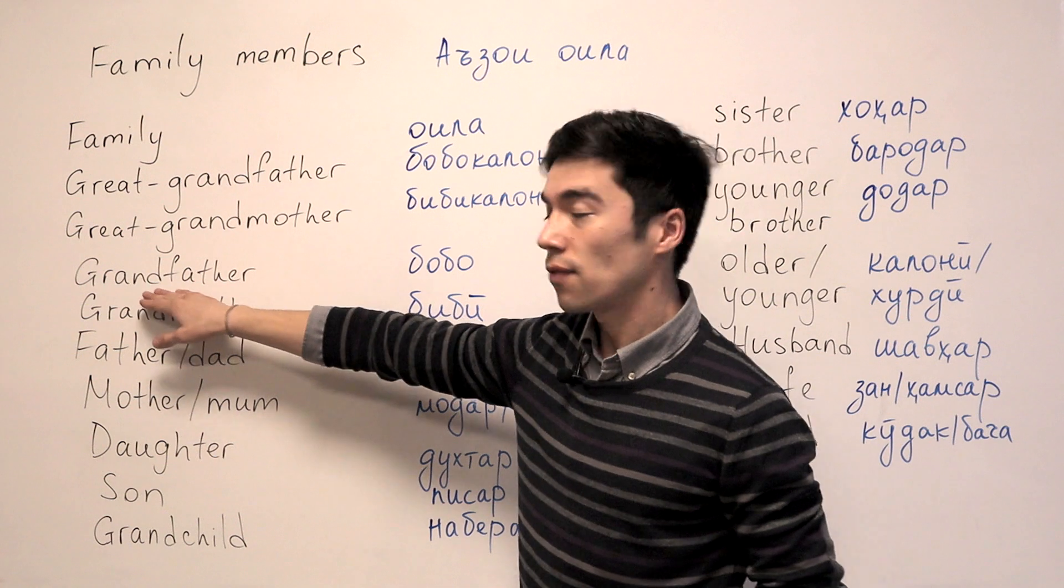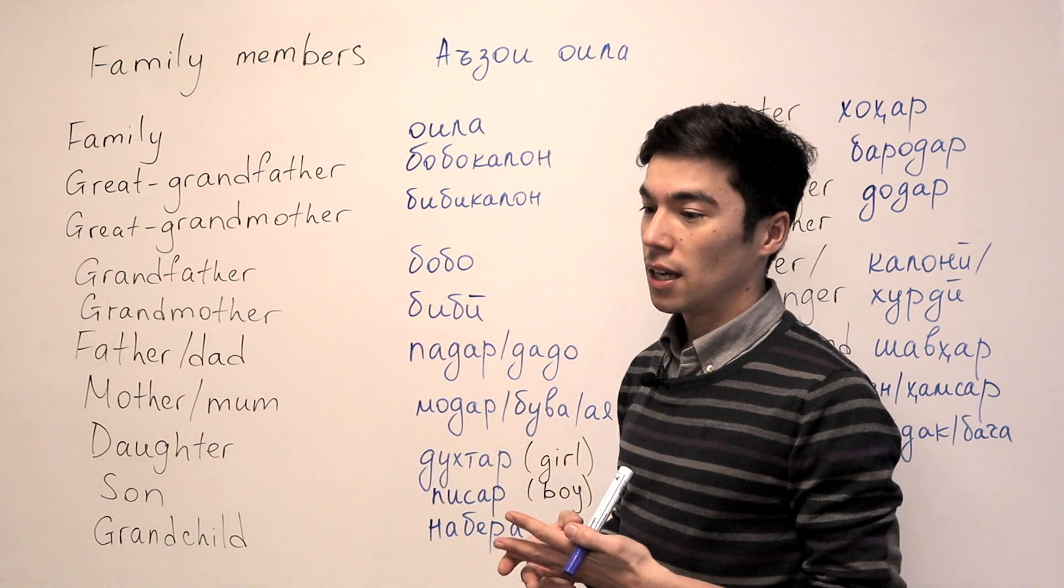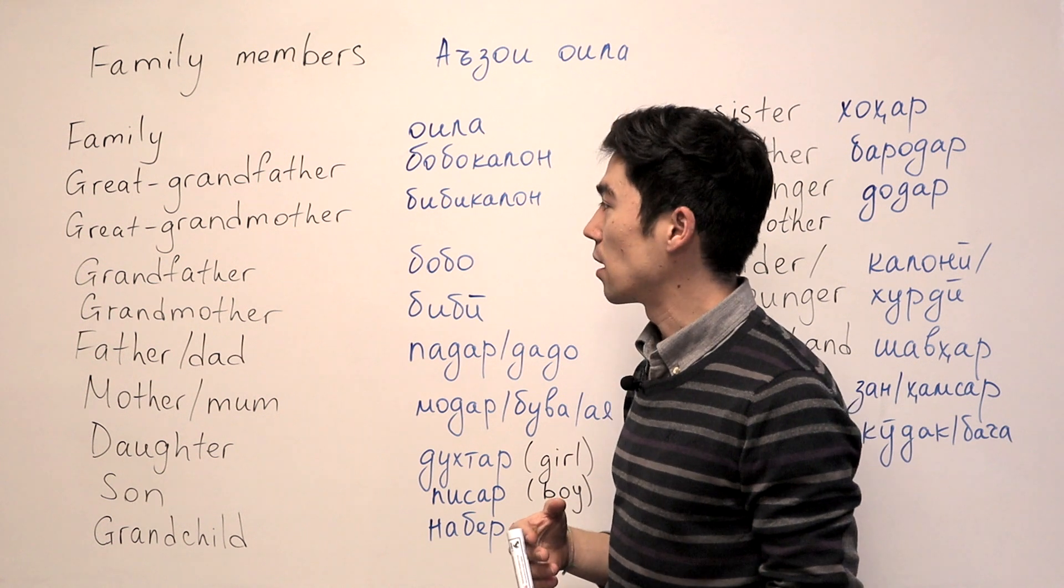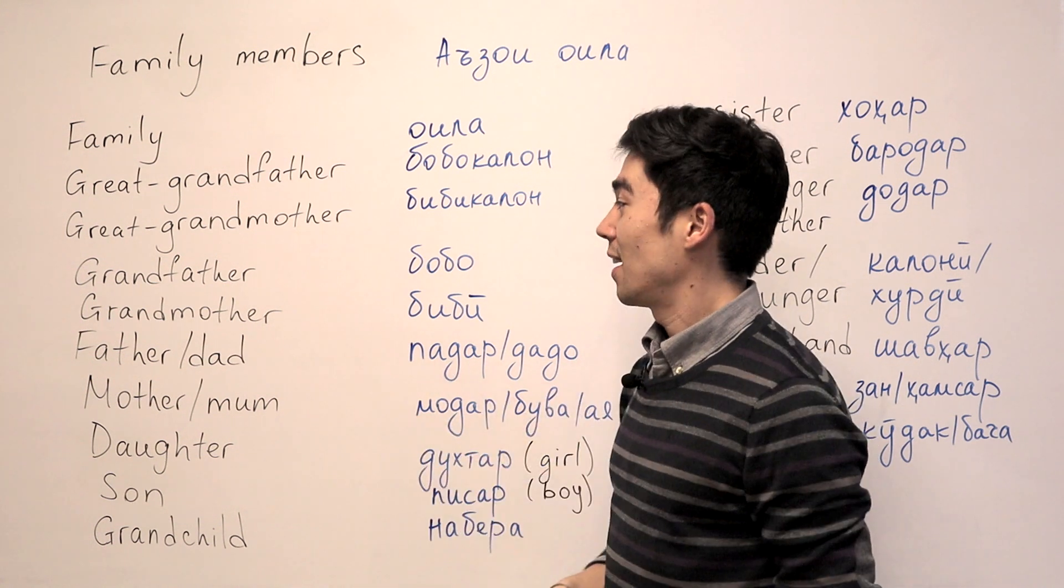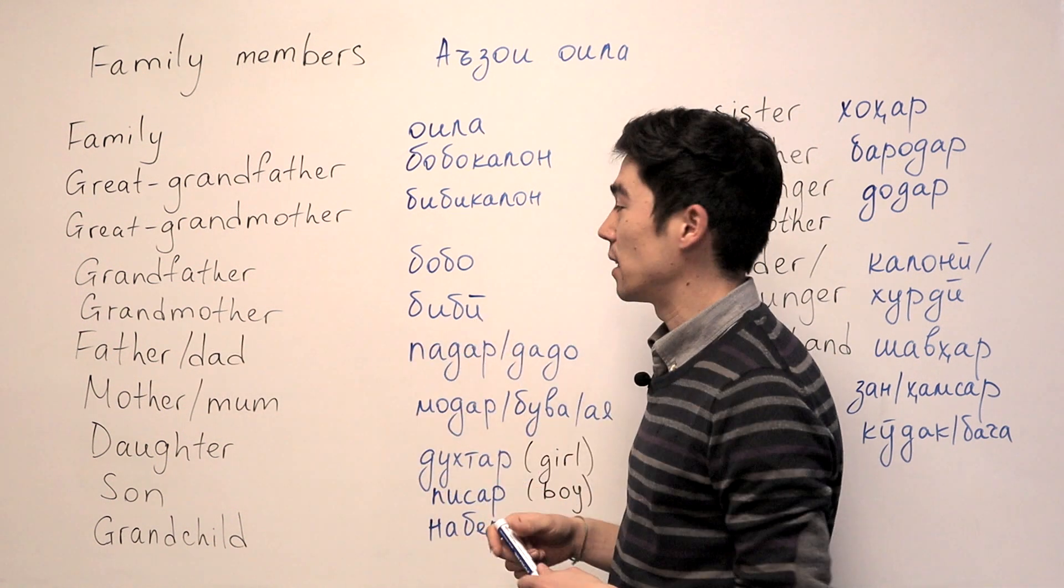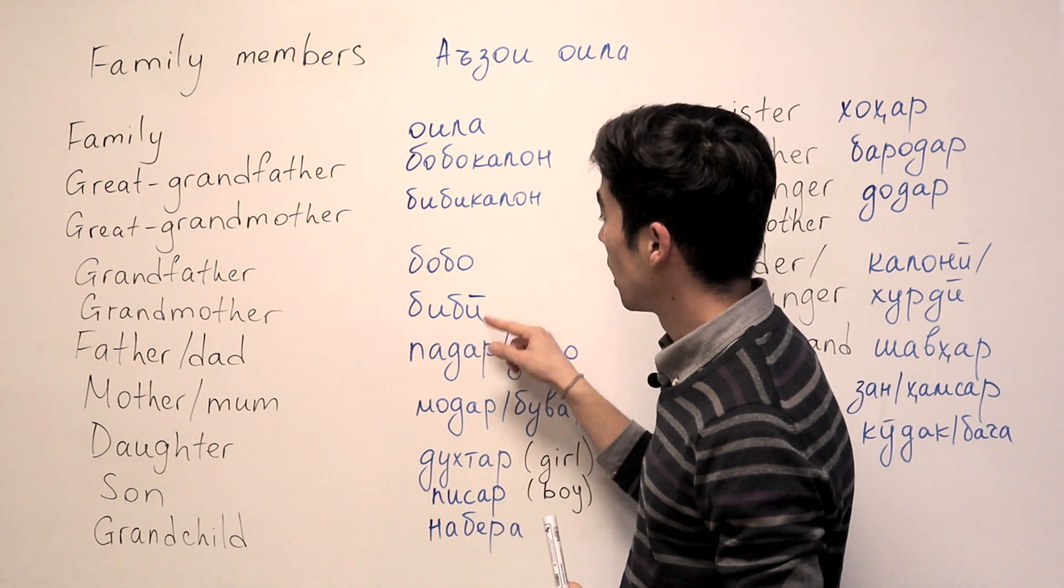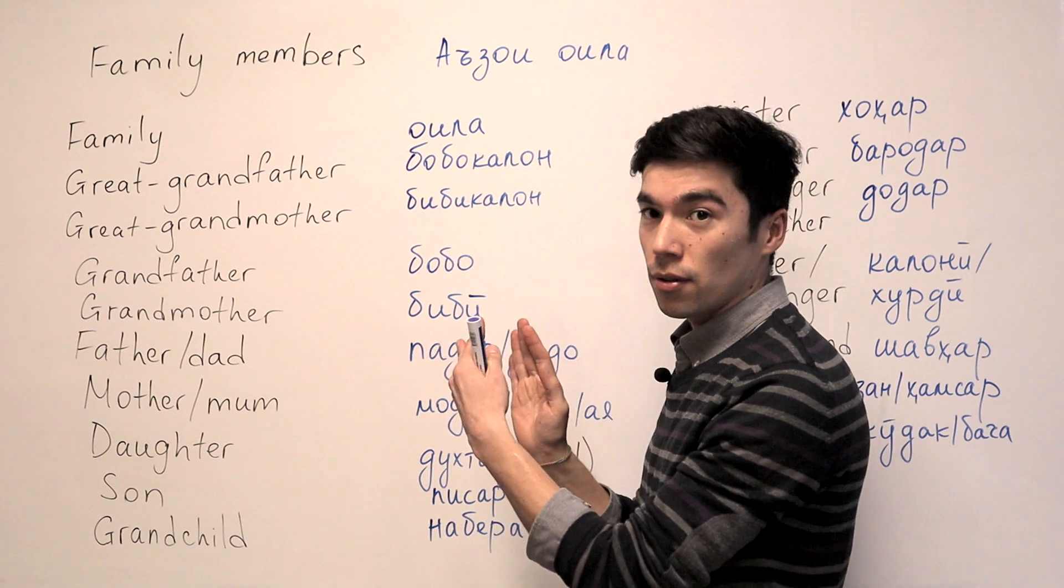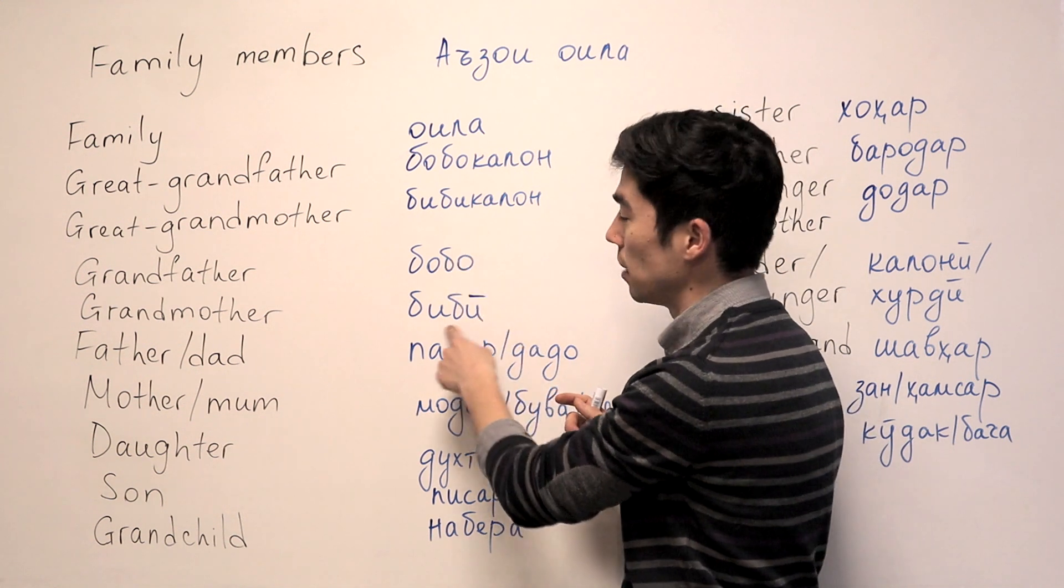And the next one is grandfather, Bobo. In some other places people say Bojom. So I used to say Bojom. And grandmother will be Bibi, and at the end we have long E, Izada Bibi. And here we don't have that because in the middle we don't use Izada. It's only at the end.